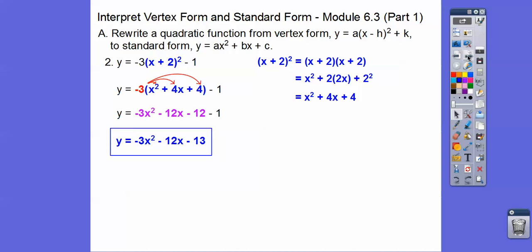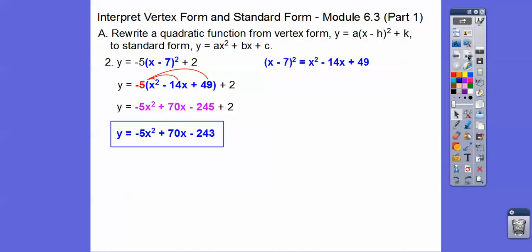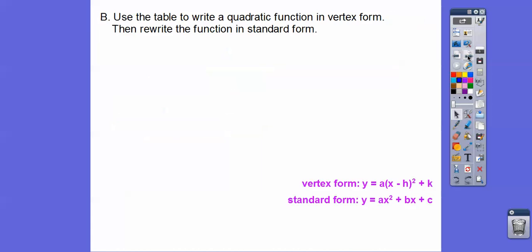All right, so, oops, one more. So let's go ahead and foil that out, and distribute the negative 5 through, and then combine like terms. I know I'm going fast, but I think you know what's going on right there. All right, so here we have, we're going to be given a table, and we're going to write it first in vertex form, and then rewrite it just like we did in standard form. So here's the table.